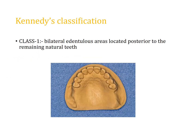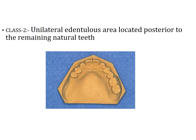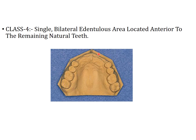Kennedy's classification is the most famous and universally recognized classification. Class 1 is when there are no teeth present posterior to the edentulous space bilaterally — it is also called a free-end saddle type of partial denture. Class 4 is a tooth-bounded edentulous area present anterior to the remaining teeth, where all teeth are present posterior to the edentulous area, and it crosses the midline.